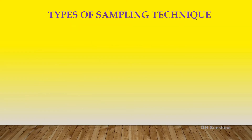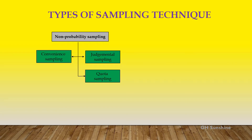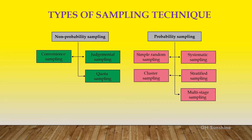Types of sampling techniques. First is non-probability sampling: convenience sampling, judgmental sampling, and quota sampling. Then, probability sampling: simple random sampling, systematic sampling, stratified sampling, cluster sampling, and multi-stage sampling.